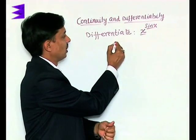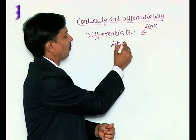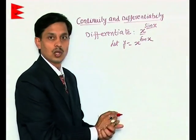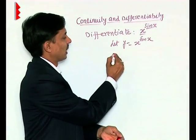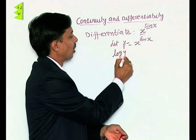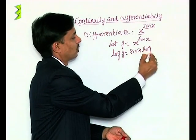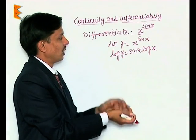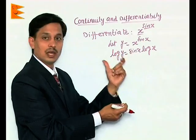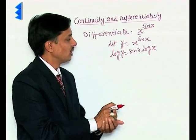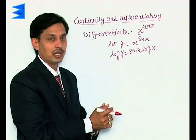That is, we suppose let y equals x to the power sin x. On taking log both sides, it will be log of y equals sin x times log x. That is, if a to the power b, then b log a, using the logarithmic rule here.